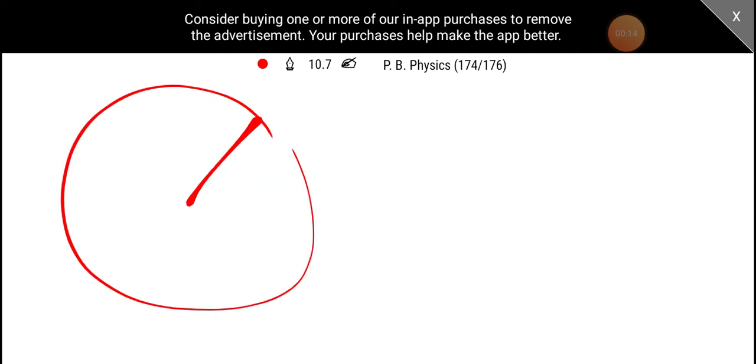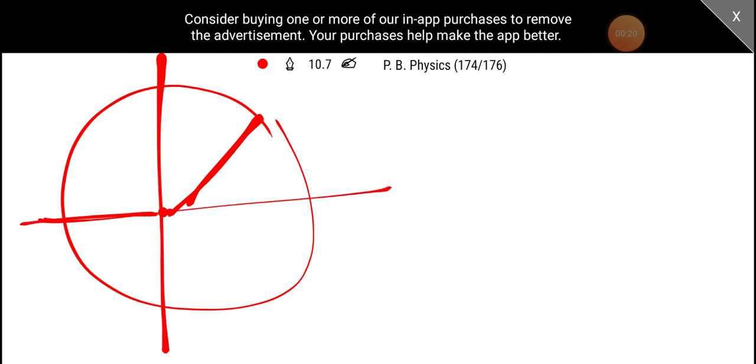This is sin x and cos x. We have a radius in a circle. We have x axis and y axis. This is the origin. This is the radius.